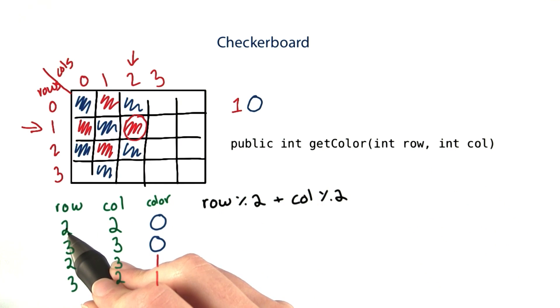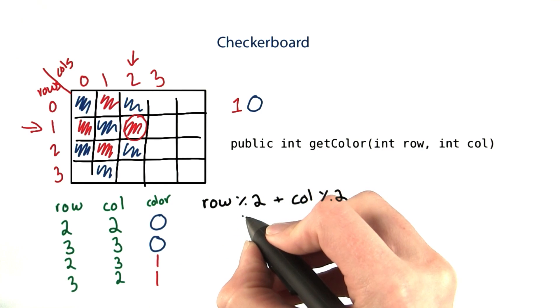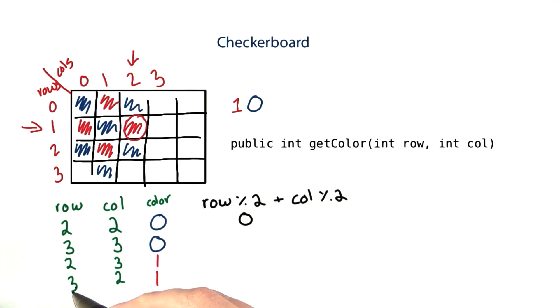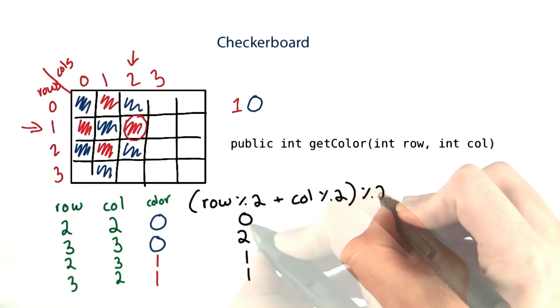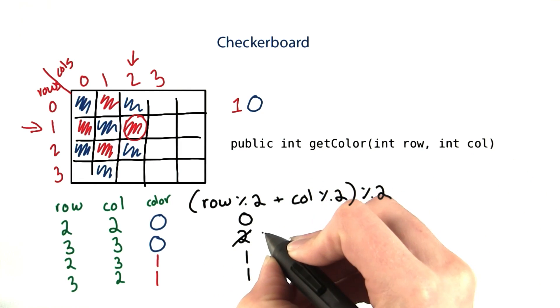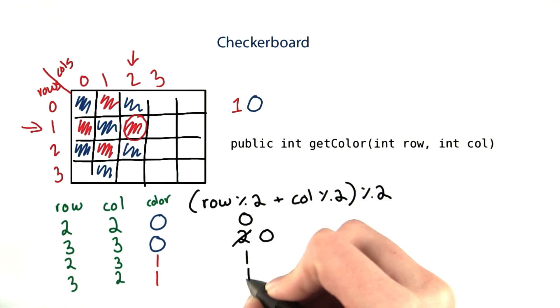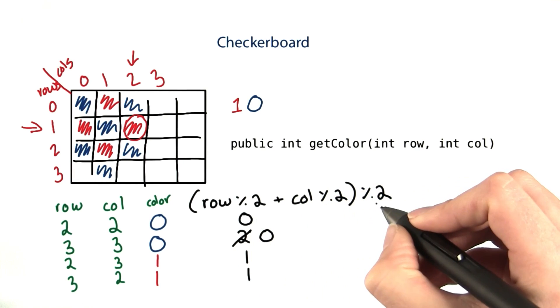2 mod 2 would be 0. 0 and 0 gives 0, so that's good. 3 mod 2 is 1, and 2 mod 2 is 0, so that gives 1. The same will happen here. This one doesn't quite work. 3 mod 2 is 1, and 3 mod 2 is also 1, so I would get 2. But then maybe if I just mod the whole thing by 2 again, then I would get 0, which is the same. The 2 would turn into 0, and the 1's would stay. So this expression might work.